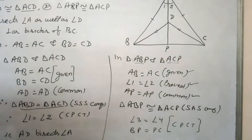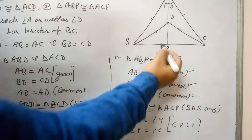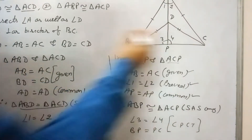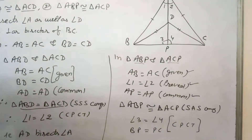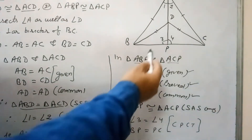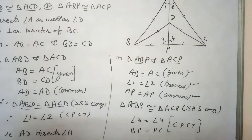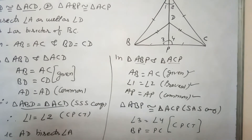From this congruency we get two results: angle 3 equals angle 4 by CPCT, and BP equals PC also by CPCT. Since BP equals CP, it means AP bisects the base BC.